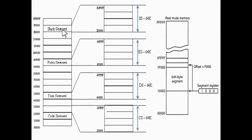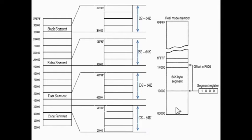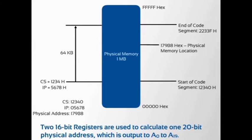extra segment and stack segment. Segment registers respectively contain the segment addresses for the code, data, extra and stack segments. They may or may not be physically separated. Each segment register contains a 16-bit base address that points to the lowest addressed byte of that particular segment in memory. IP — instruction pointer —